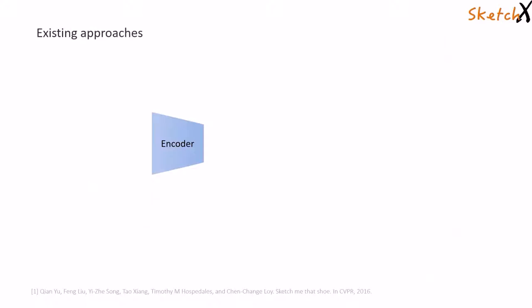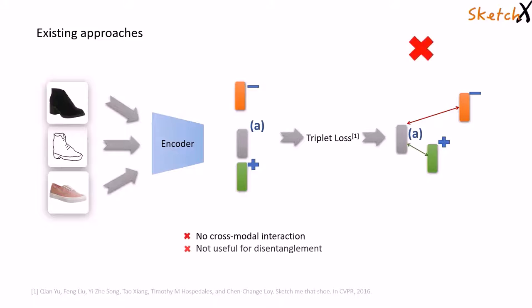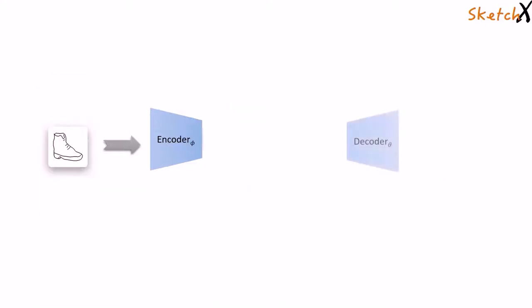Existing approaches usually encode a sketch and a photo into the joint representation space, which are learnt over a discriminative objective like triplet loss. However, as this framework does not involve cross-modal interaction, it won't allow for proper disentanglement of the style component from its semantic meaning, which is essential for style agnostic retrieval.